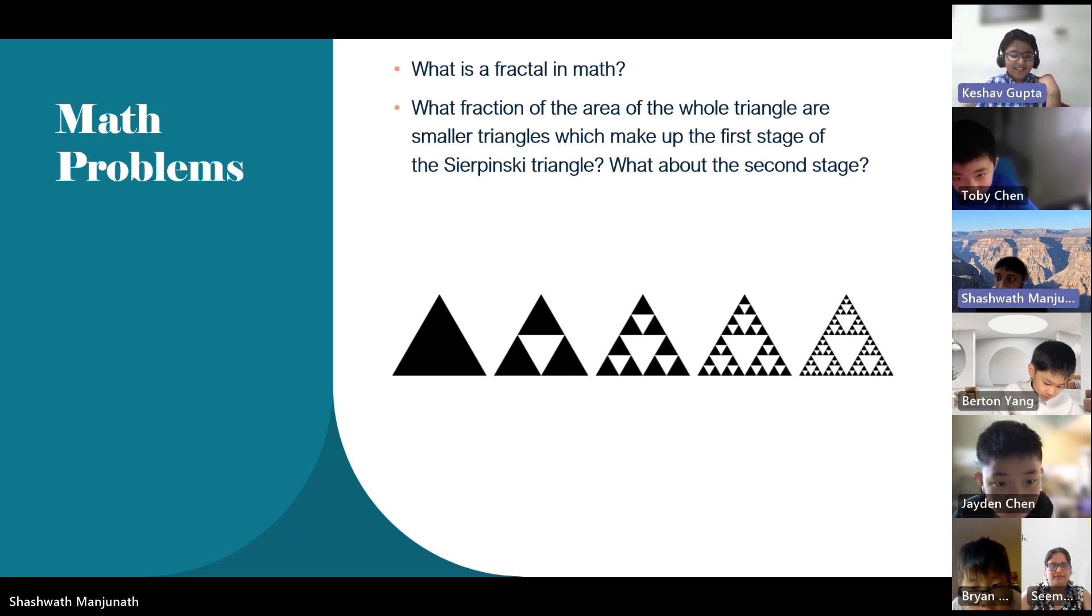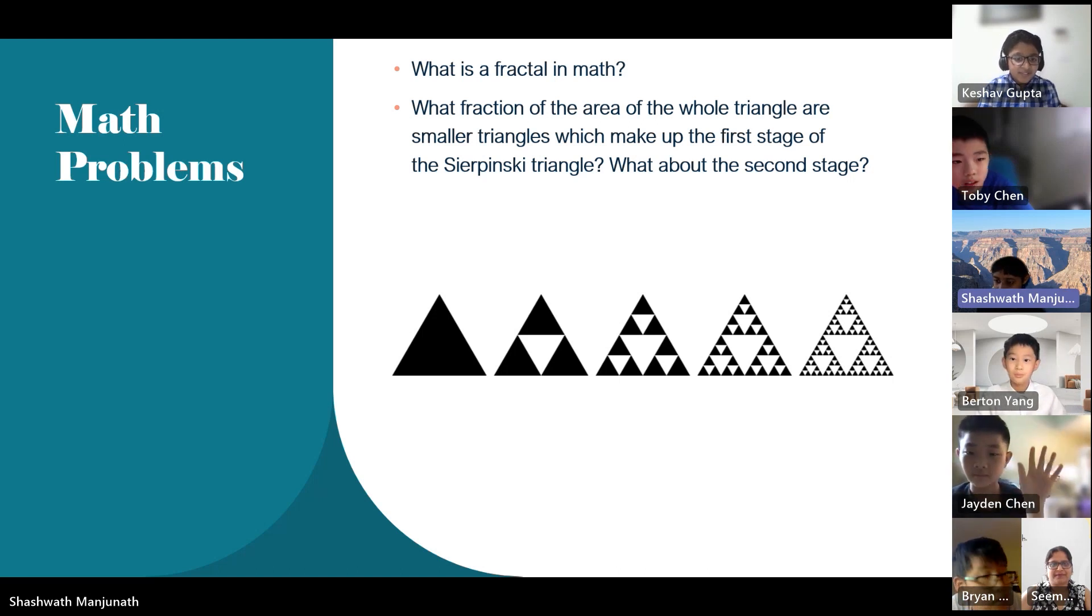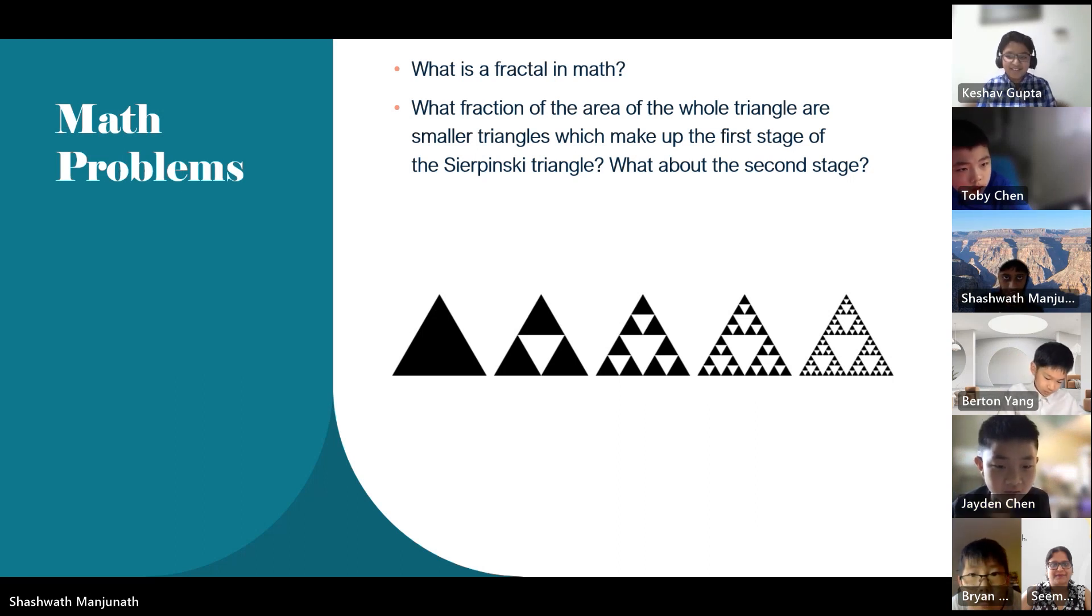What is a fractal in math? It's like an infinite shape that goes on forever. Like a mathematical shape that's infinitely complex. What fraction of the area of the whole triangle or smaller triangles? Who wants to do that one? Okay, Jaden. For the first triangle, the shaded part makes up three quarters and the unshaded part is one-fourth.